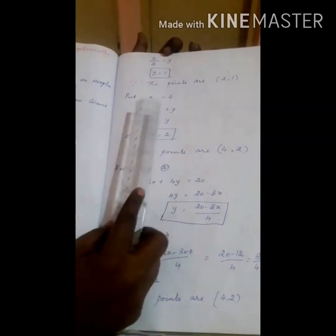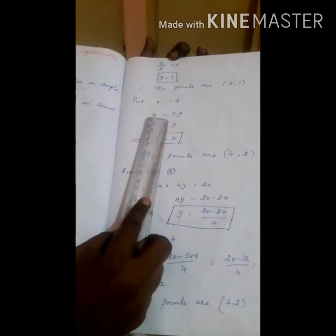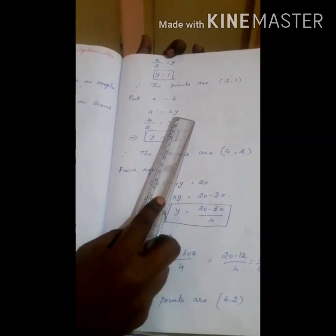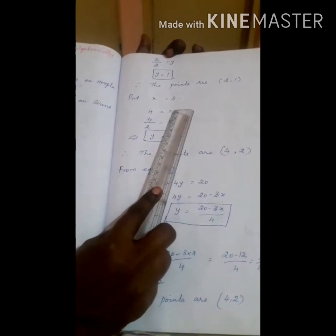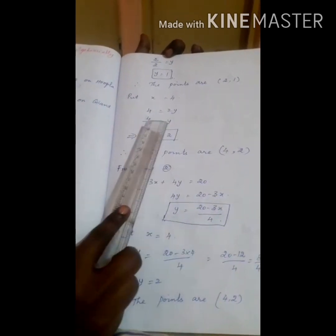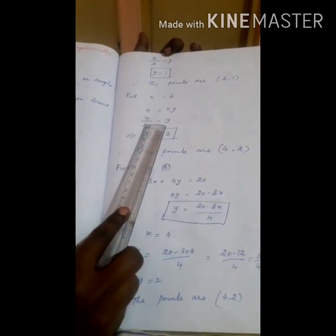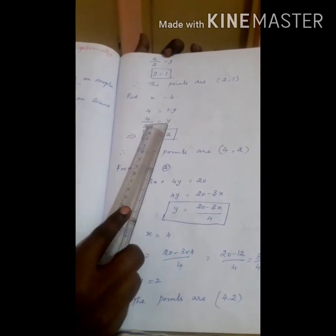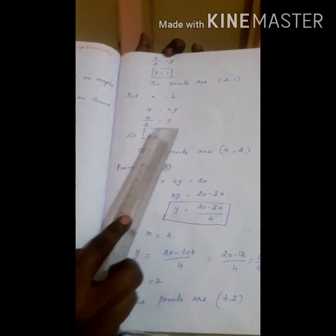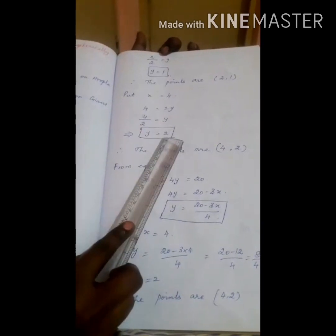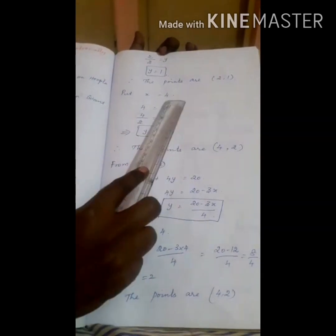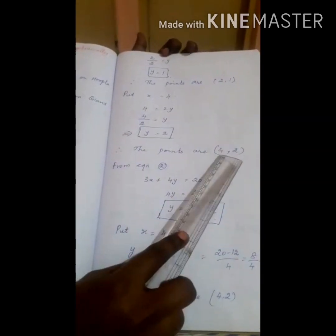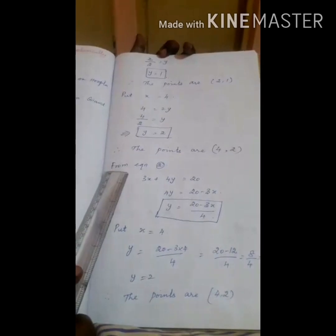Now put x equal to 4. That is 4 is equal to 2y. This 2 goes as division, therefore 4 by 2 is equal to 2. That is y equal to 2. Therefore the points are (4, 2).